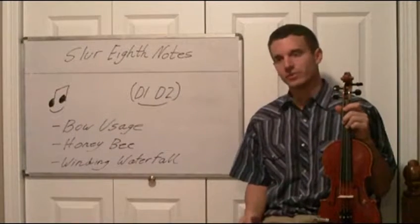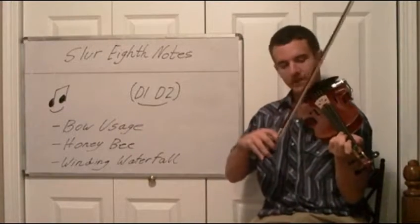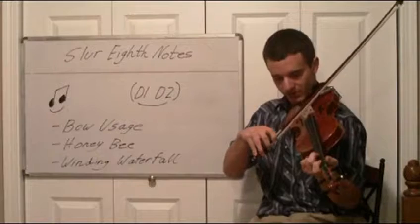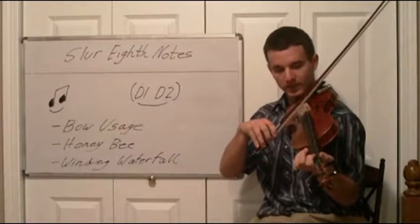So now we're actually going to learn this with a couple songs. The first one's going to be Honey Bee. Let's learn how to do that. It's going to start off with an A2 on the A string, D1, A1.